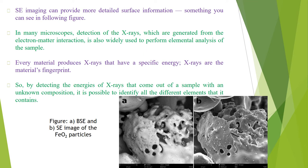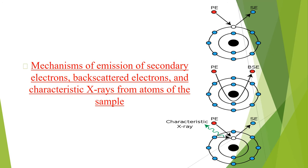Figure A shows the backscattered electron image and Figure B shows the secondary electron image of iron oxide particles. The mechanism of emission of secondary electrons, backscattered electrons, and characteristic X-rays from atoms of the sample can be seen in these figures.